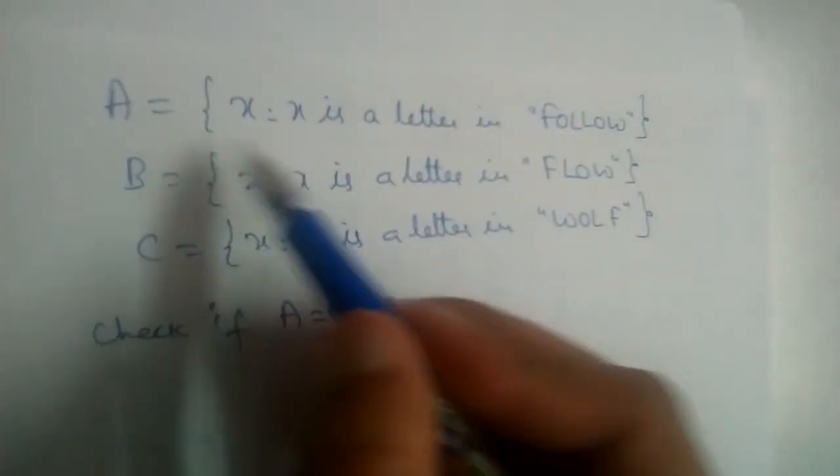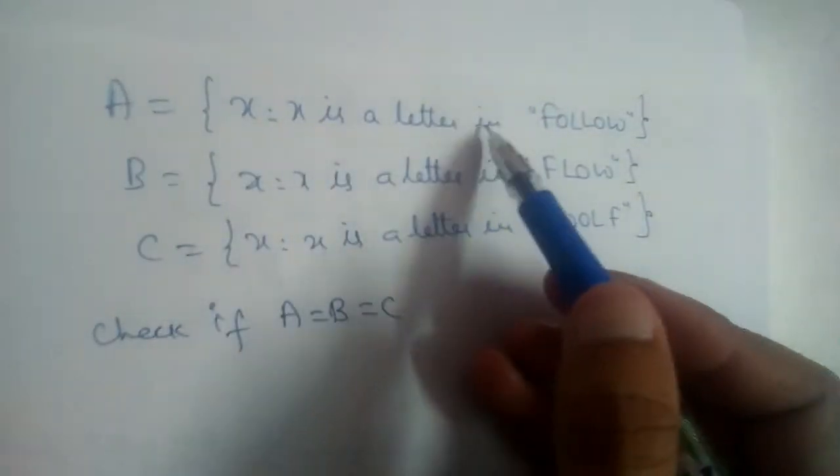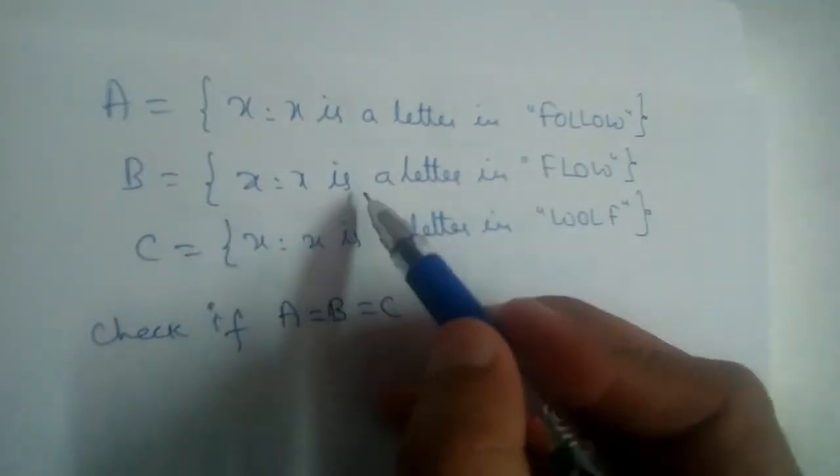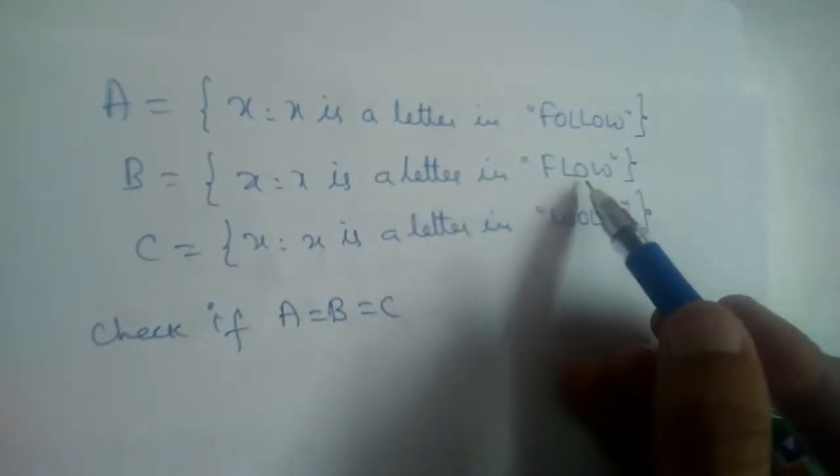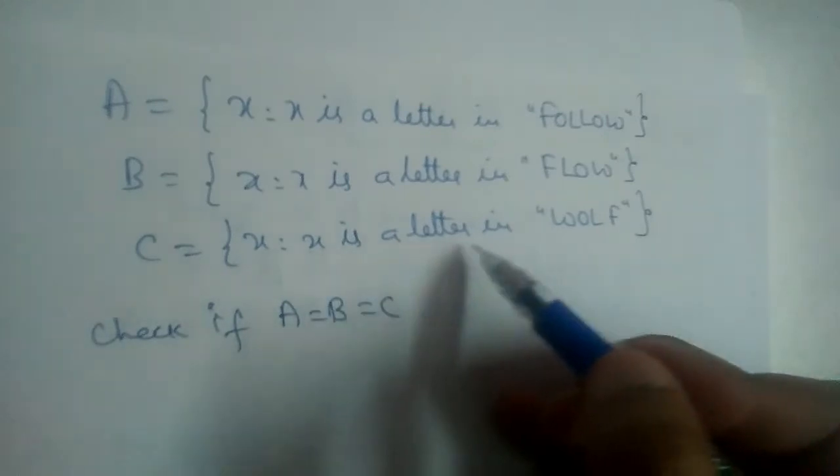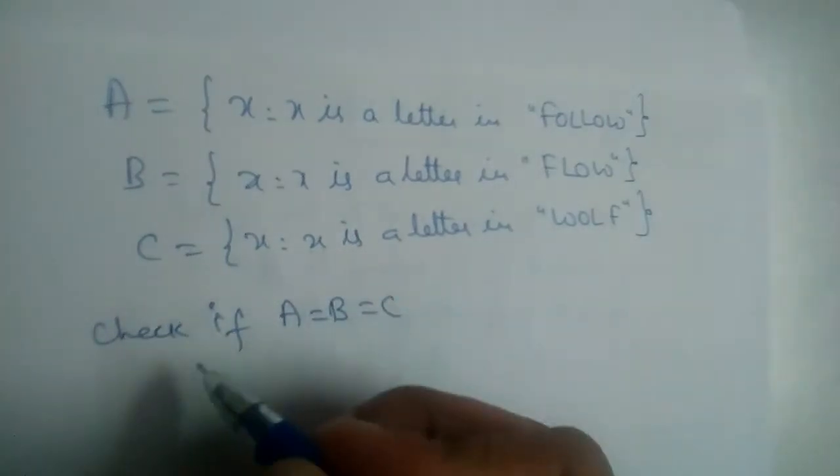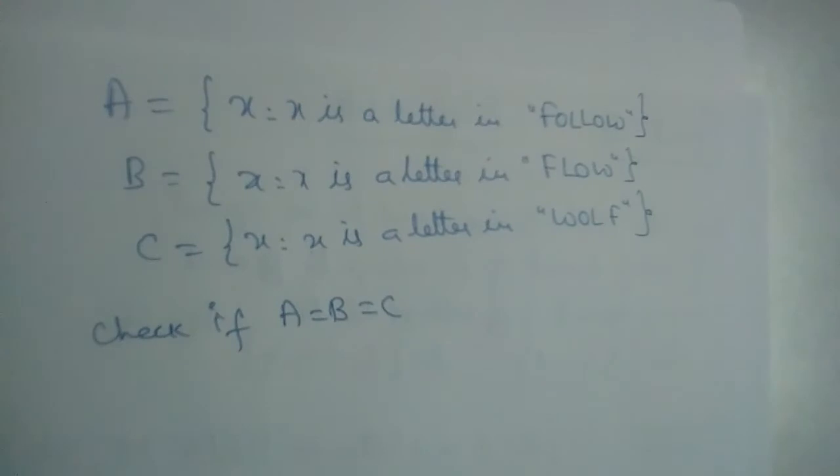We have problem: A equals X such that X is a letter in follow, and B is X such that X is a letter in flow, and C is such that X is a letter in wolf. We should check if A is equal to B is equal to C or not.